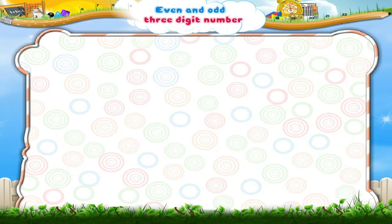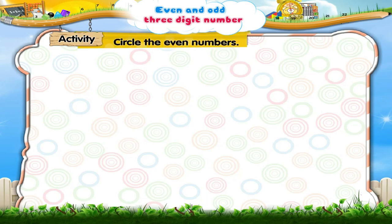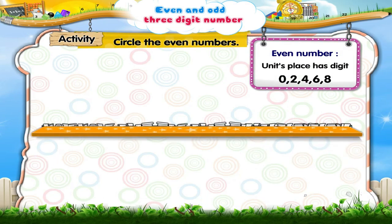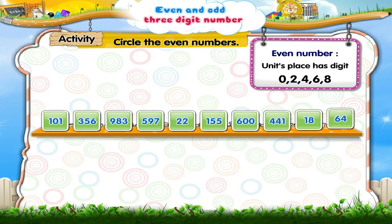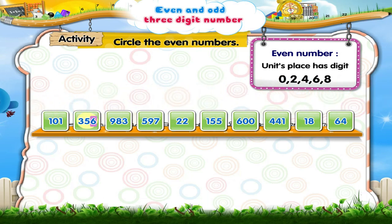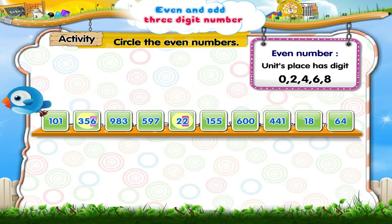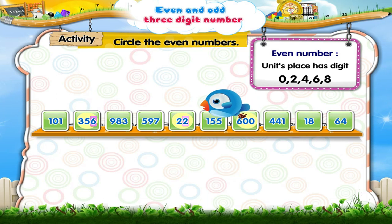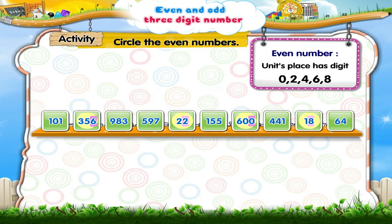Now, let us do an activity. Circle the even numbers. The even numbers are 356, 22, 600, 18, and 64.